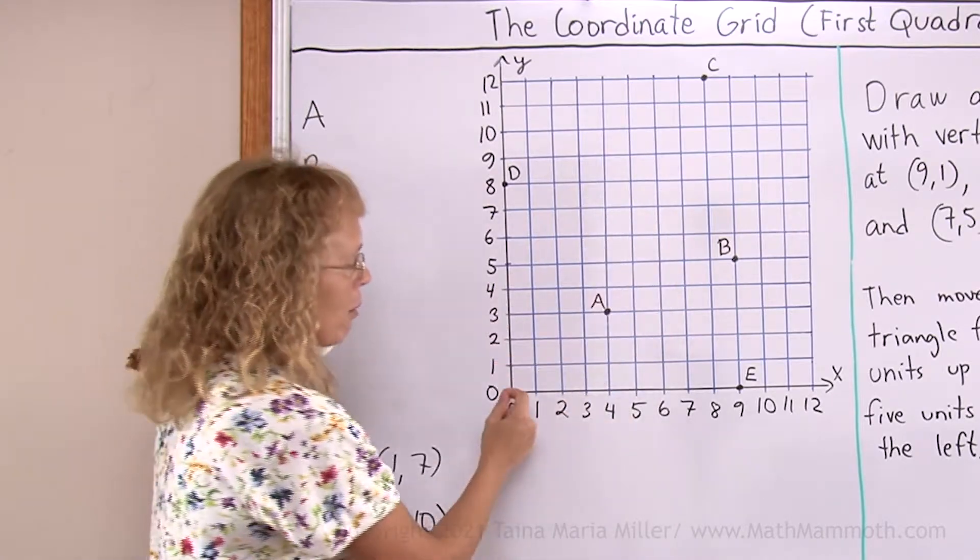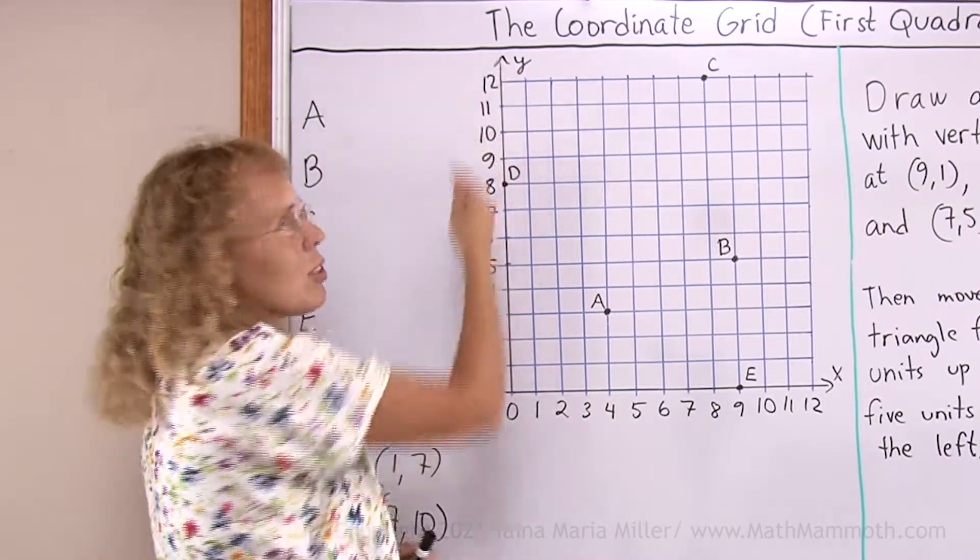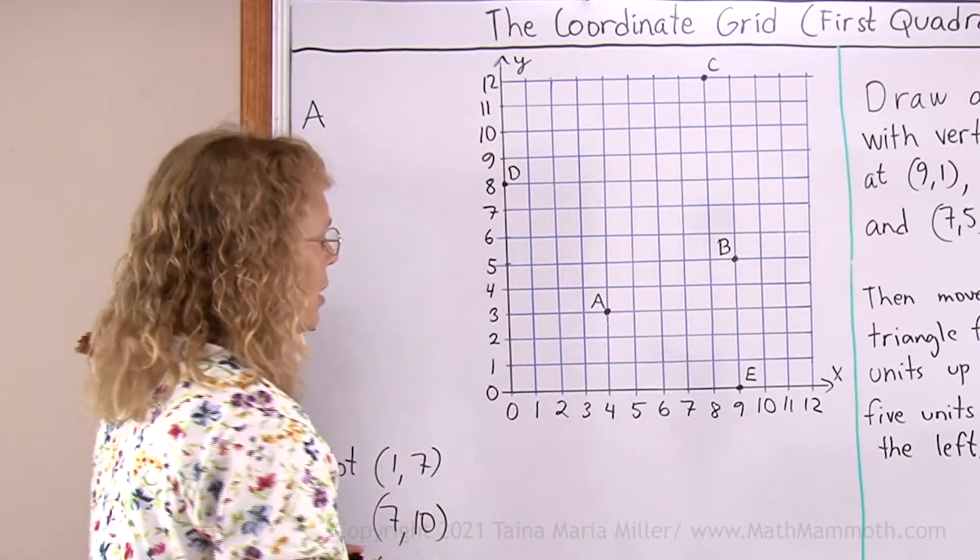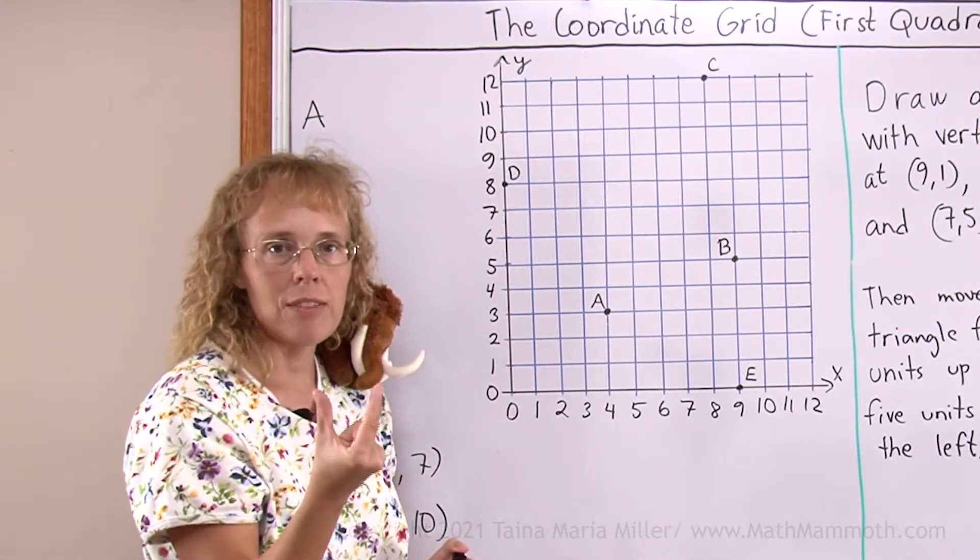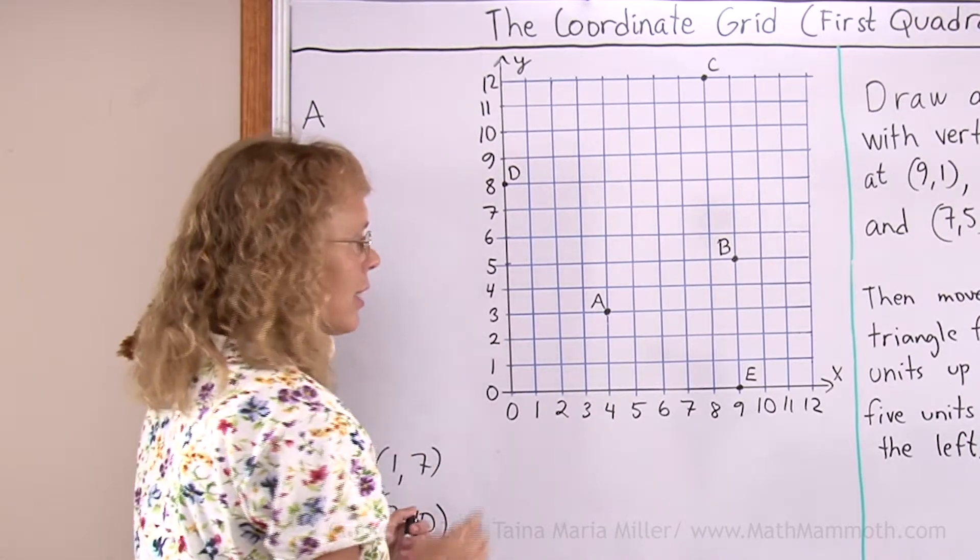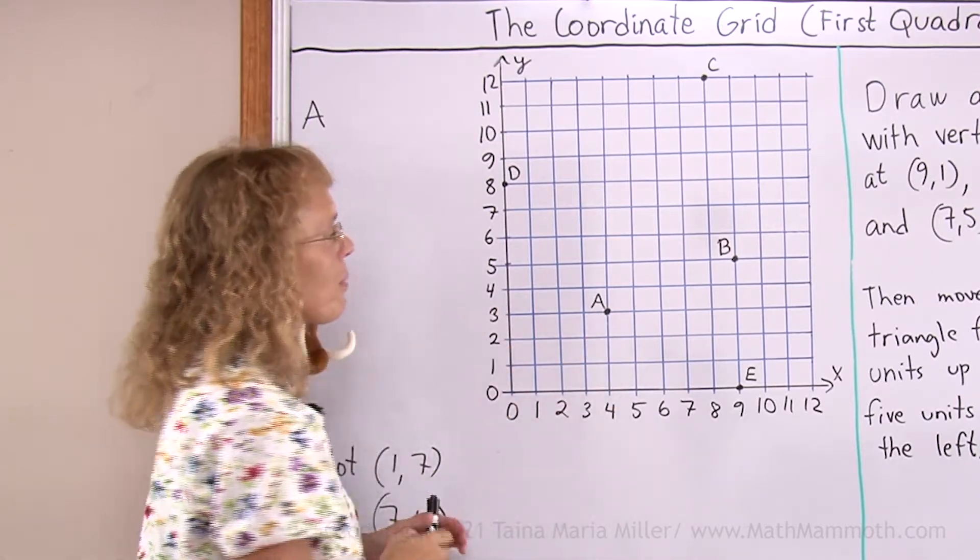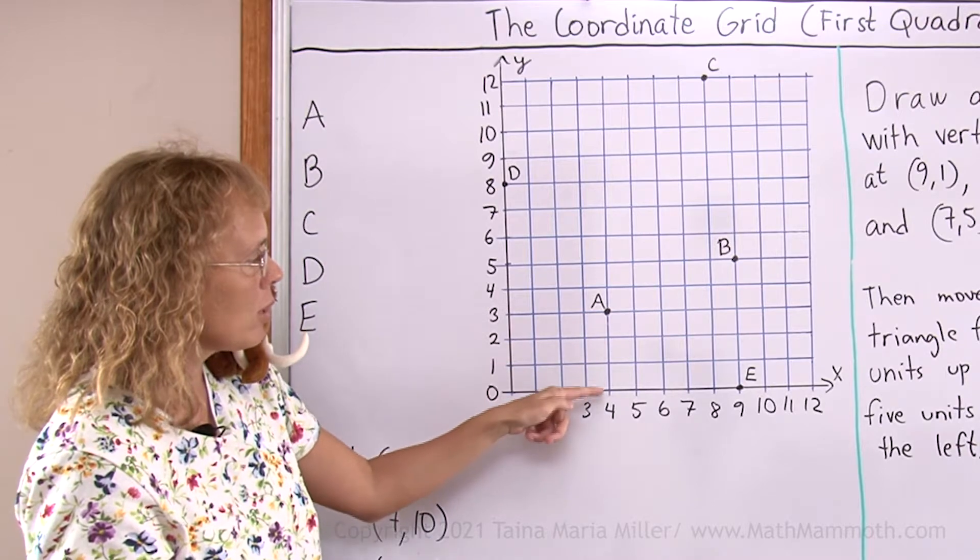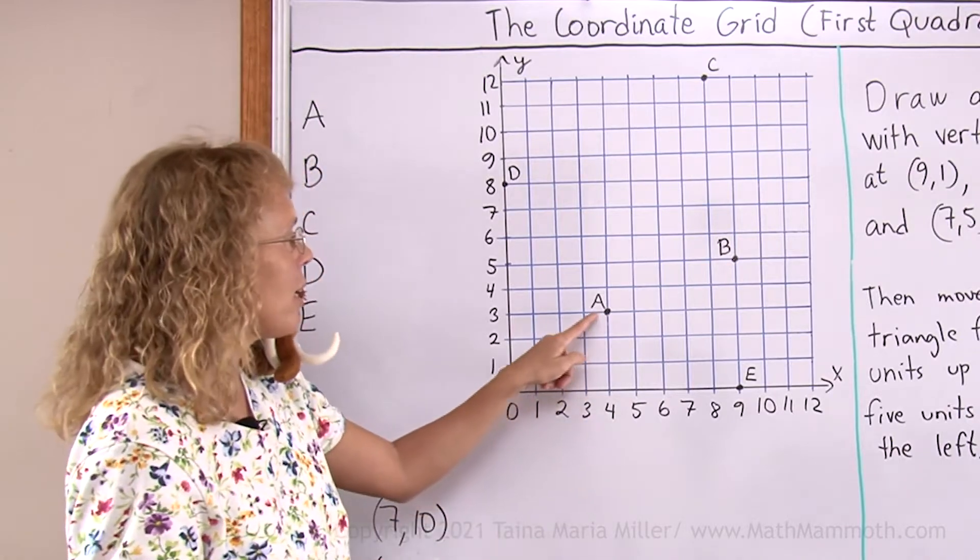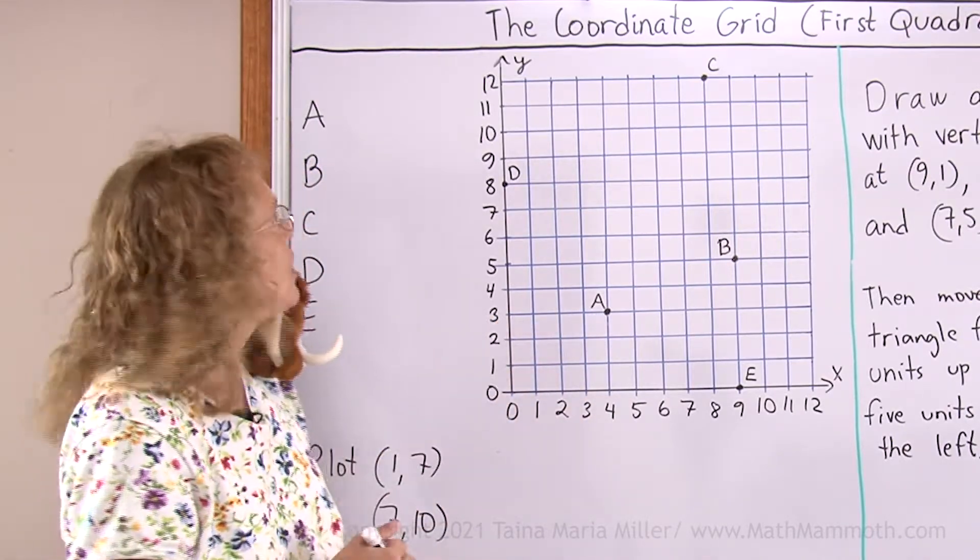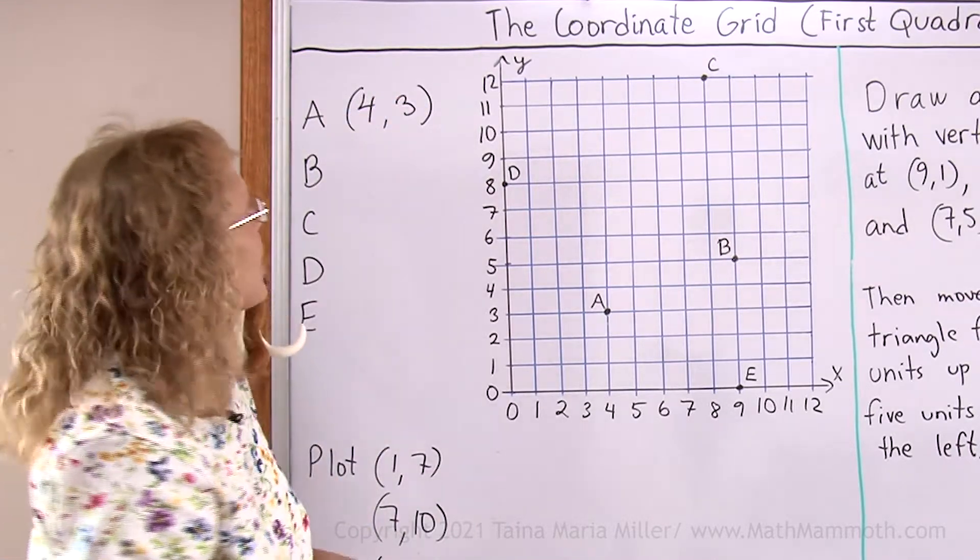In the coordinate grid we have one line running this way that is called the x-axis and this vertically running line here is called the y-axis. For example, point A here has two numbers associated with it that are its coordinates. It has an x-coordinate and a y-coordinate and those two numbers are 4 and 3. When I'm here at point A I look down to the x-axis and I see 4 here. So 4 is its x-coordinate and then this way 3 is its y-coordinate and I write it like this: 4, 3 in parentheses.